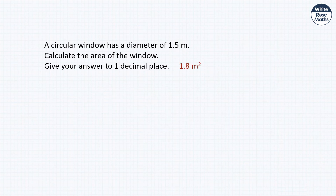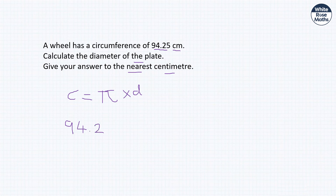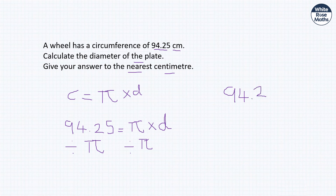A wheel has a circumference of 94.25 centimetres — calculate the diameter to the nearest centimetre. Using C = πd: 94.25 = πd, so d = 94.25 ÷ π ≈ 30 centimetres to the nearest whole number.